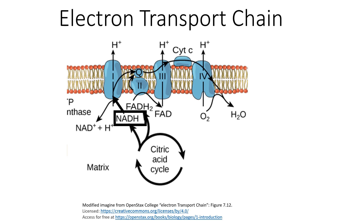What complex one will do is oxidize NADH back to NAD+. This means within complex one of the electron transport chain there are now two electrons.